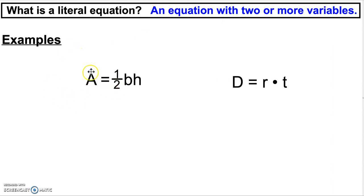An example would be the area of a triangle formula. The area is equal to one half times the base times the height. There are three different variables in this equation. Another one is distance. Distance equals rate times time. So this is an example of a literal equation.